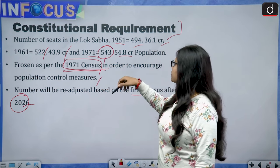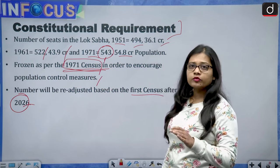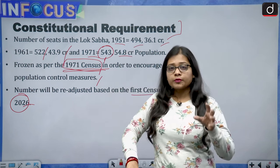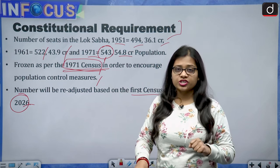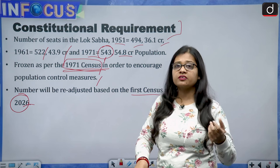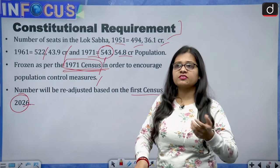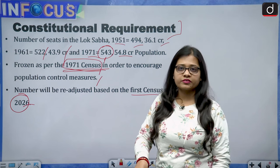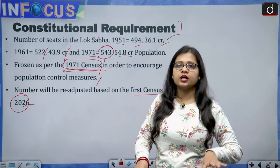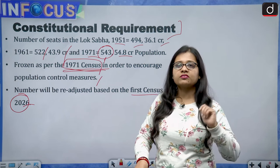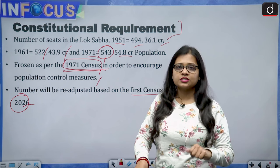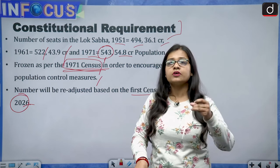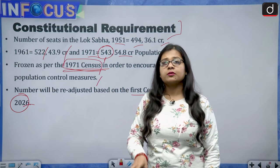The seats were frozen because the population was booming and it was thought that if seats kept changing, larger northern states like Uttar Pradesh, Bihar, Madhya Pradesh, and Rajasthan — which have bigger populations — would have far more seats than the southern states, which have lower populations. This would create discrimination between southern and northern states, as lower population cannot be the only measure for giving fewer Lok Sabha seats.